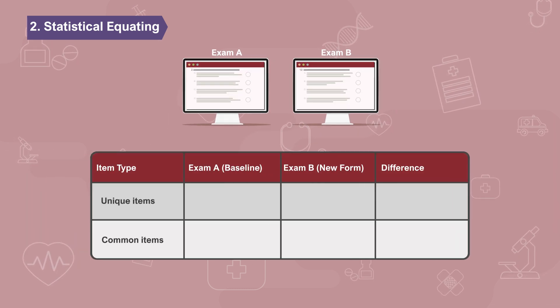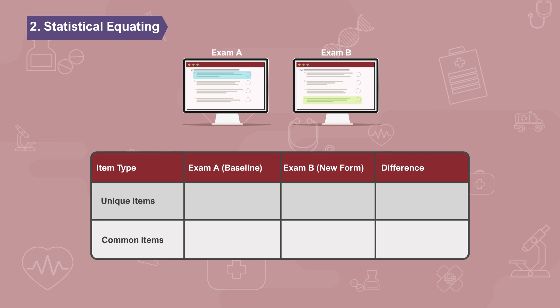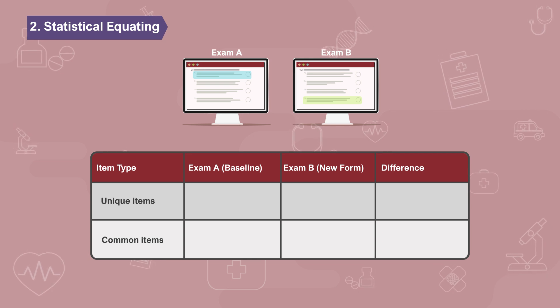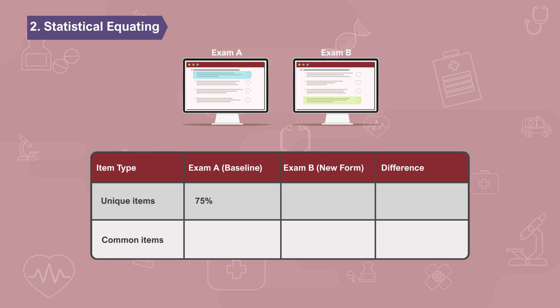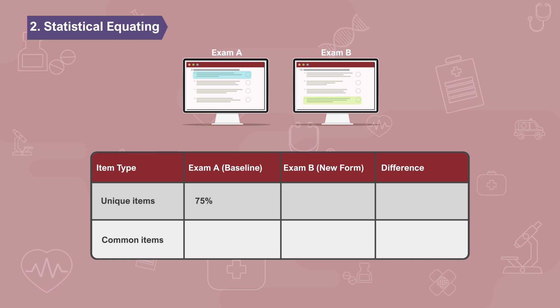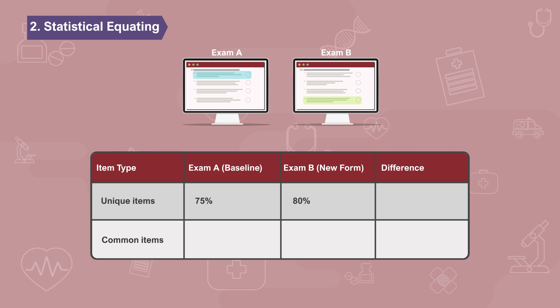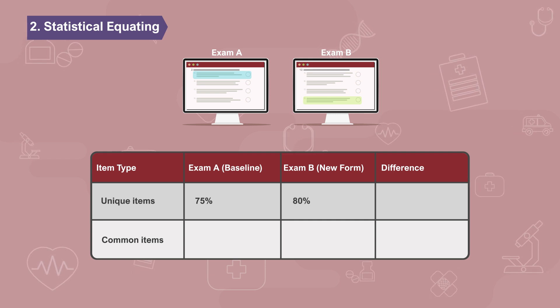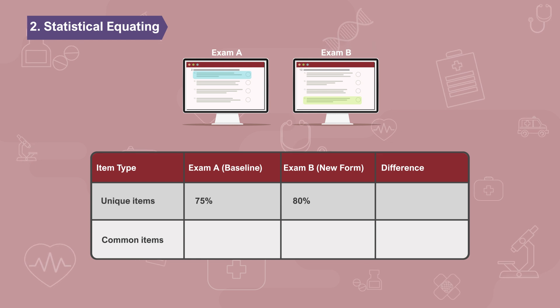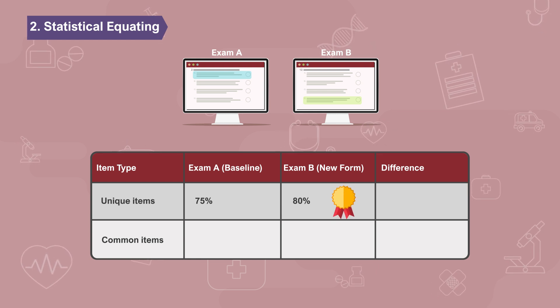Let's first look at the performance of a candidate on the unique questions. In our example, we see that the candidates who took exam A had an average performance of 75% on the unique questions, while the candidates who took exam B had an average performance of 80% on their unique questions. So, if we were to just look at the unique questions, we might conclude that the candidates who wrote exam B are better than those who wrote exam A.